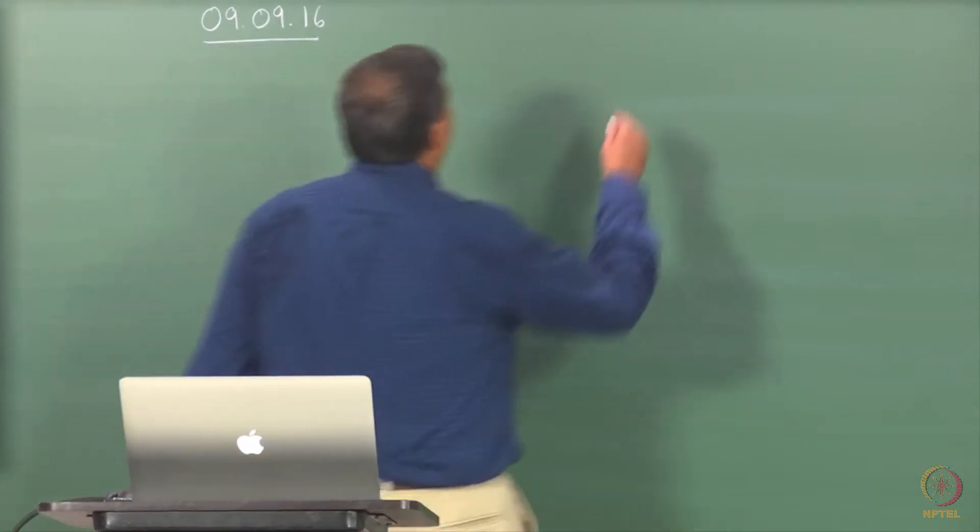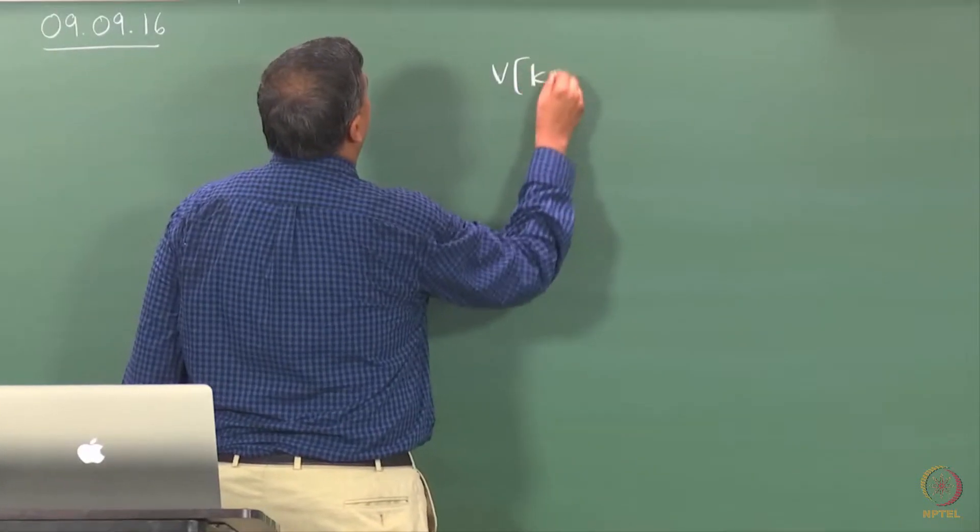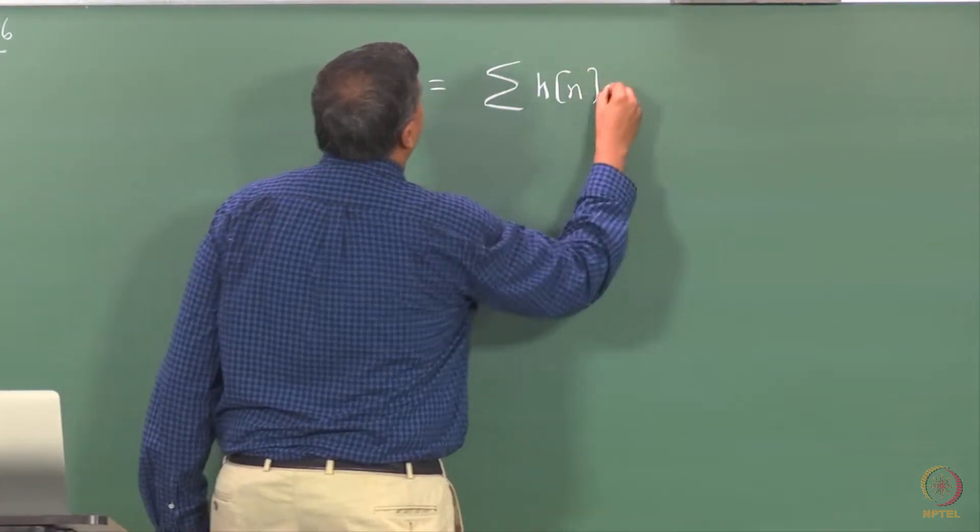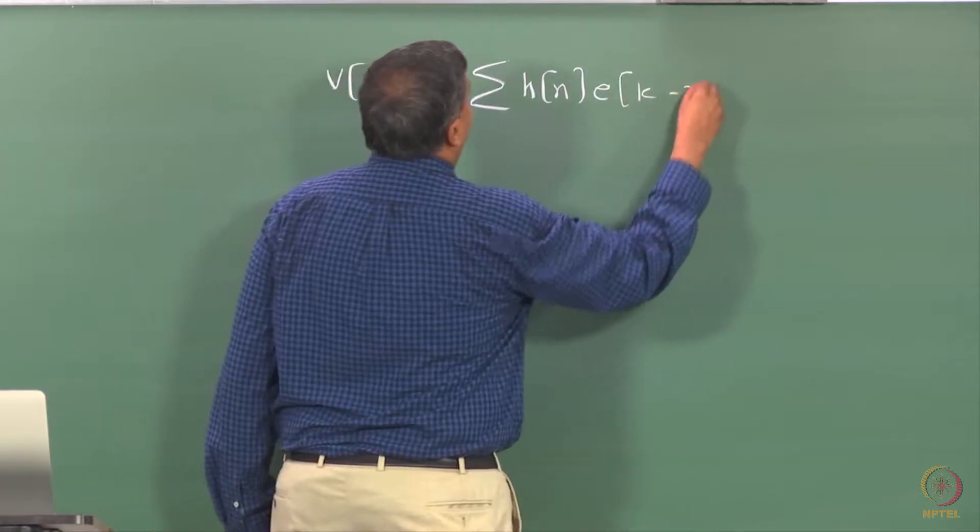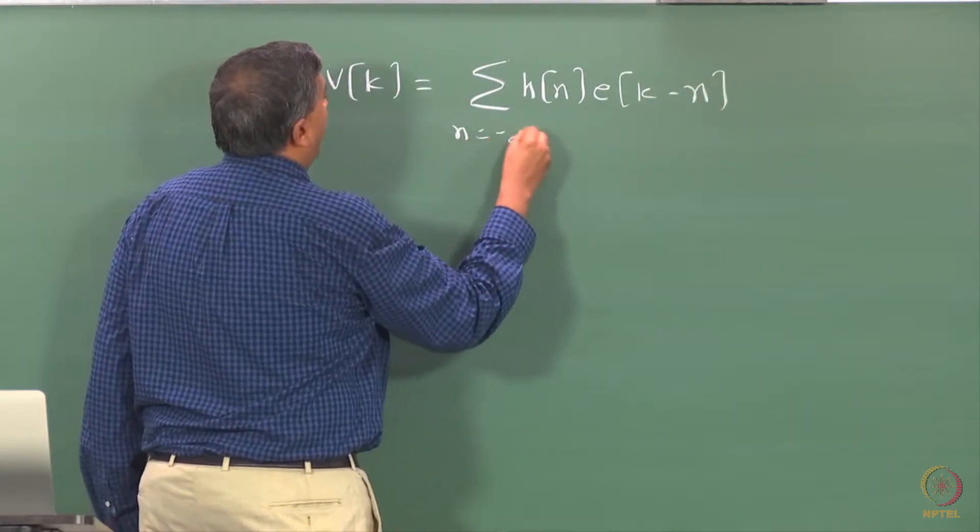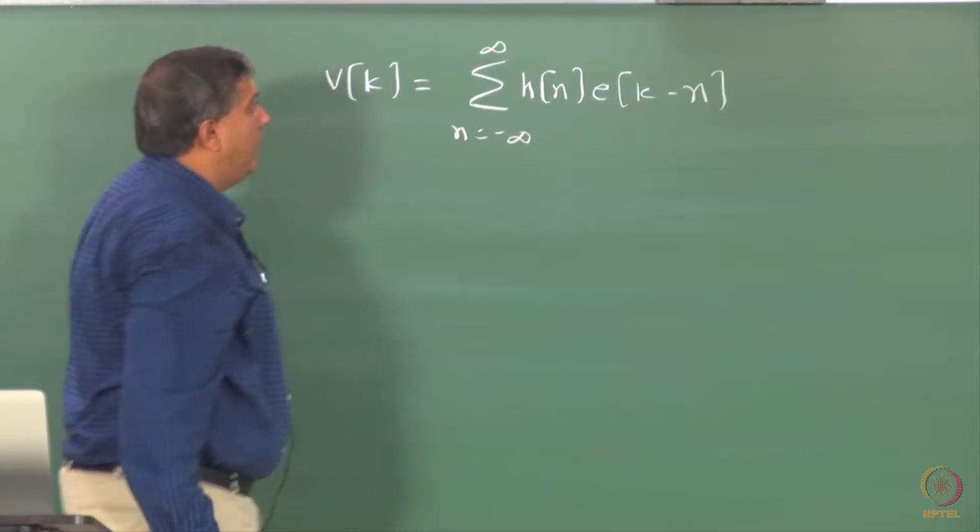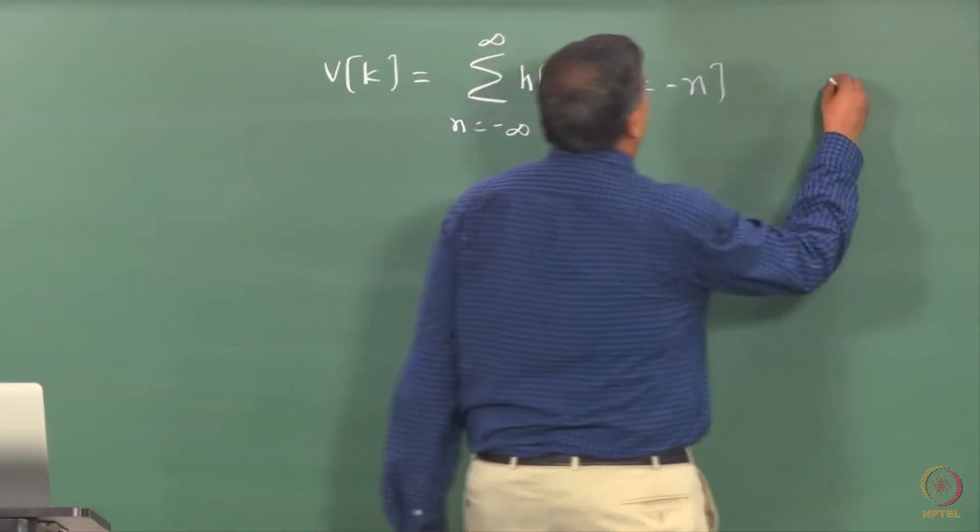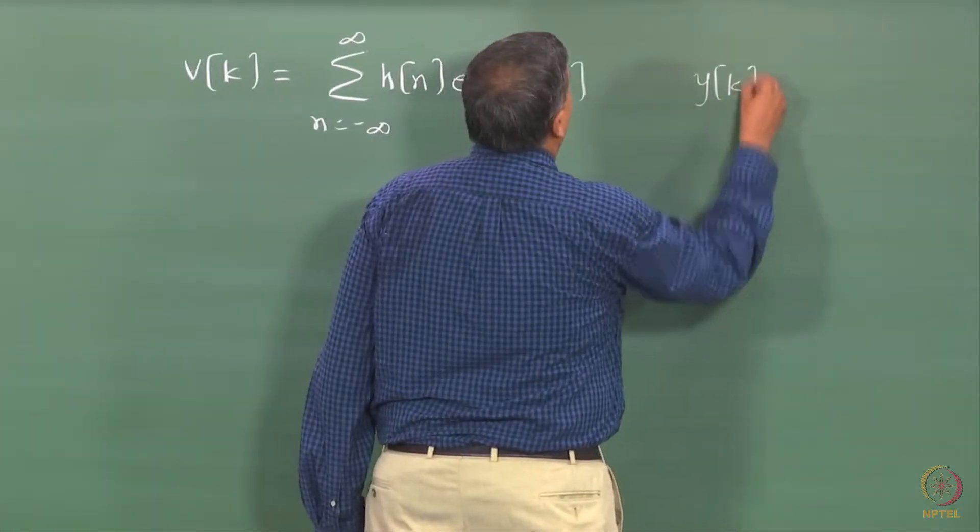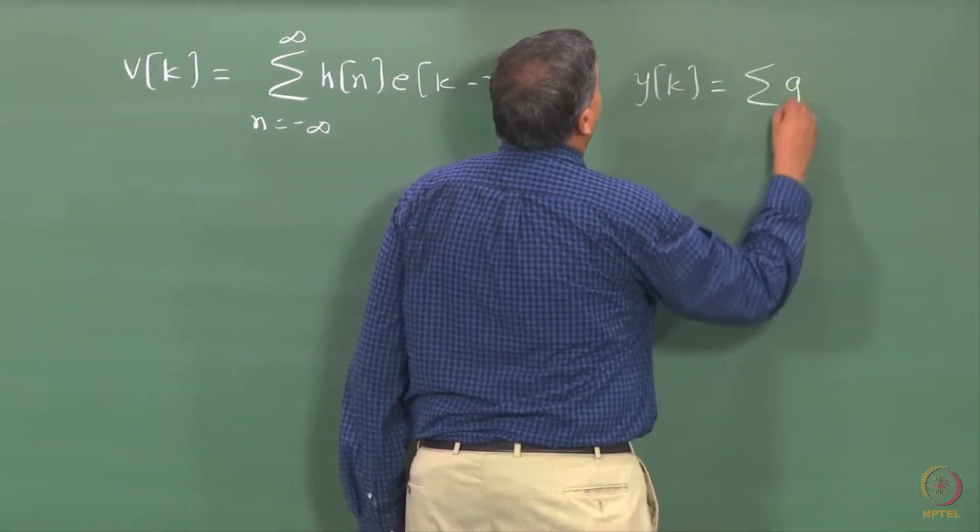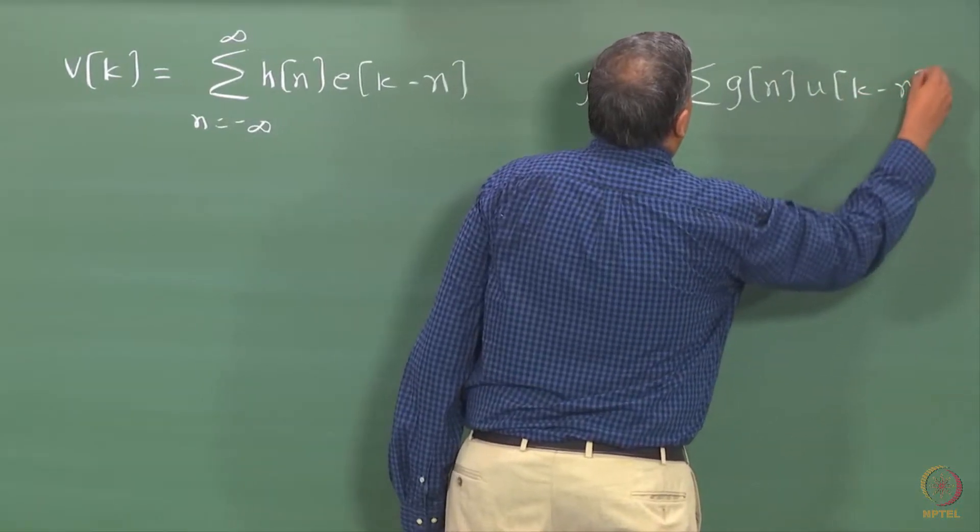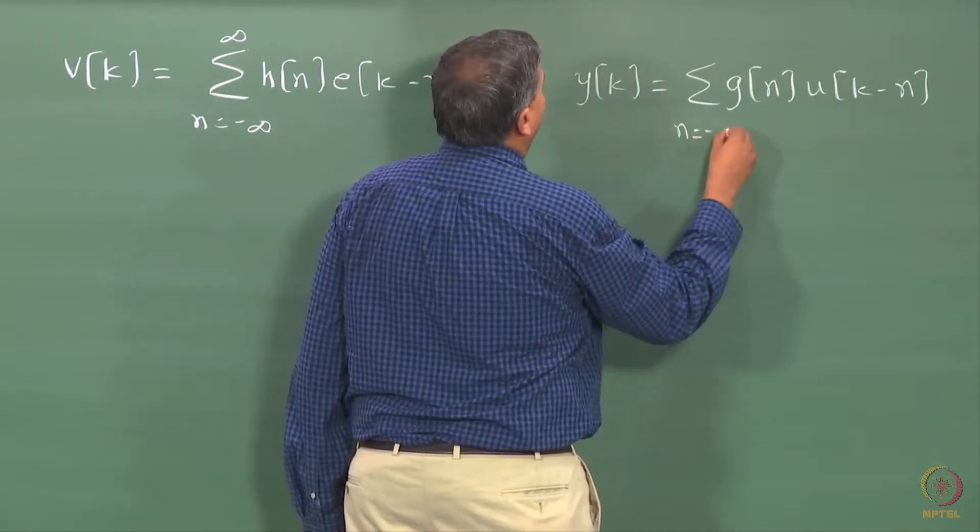So let us look at this definition that we have for a linear random process. And yesterday we did talk about its strong similarities with that of the convolution equation that you see in deterministic world. I will just write that by the side for your convenience.